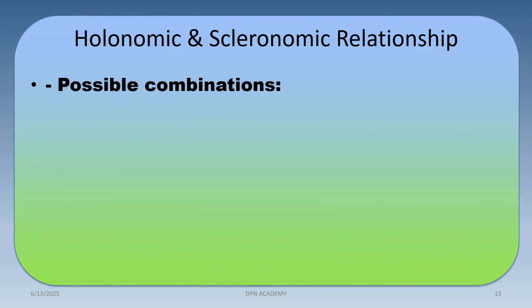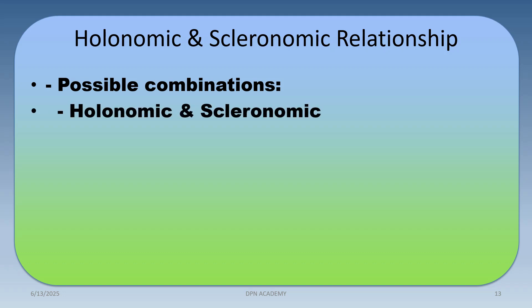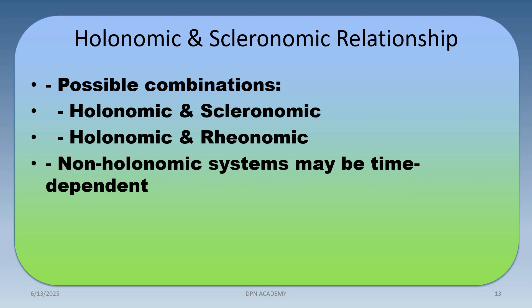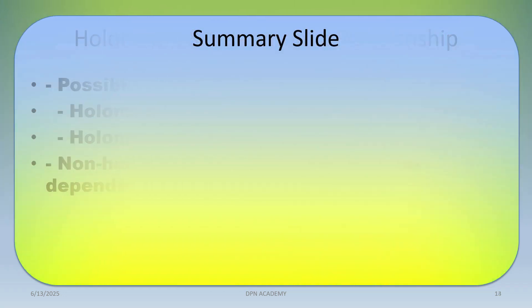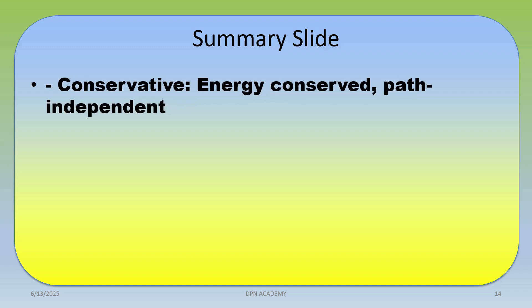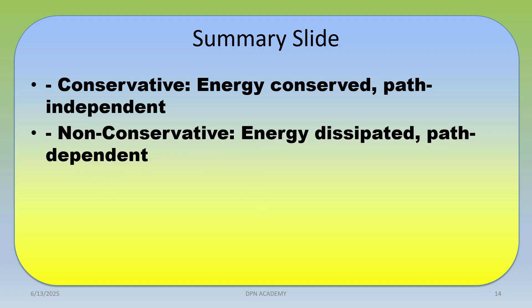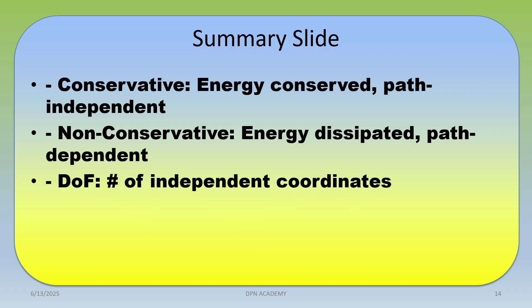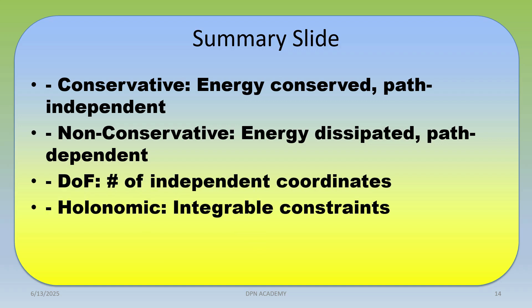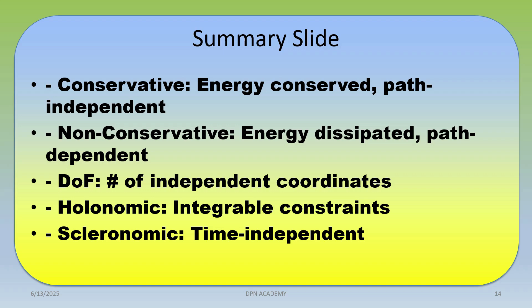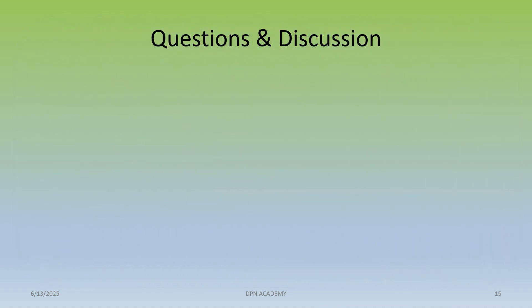There are possible combinations in classical mechanics: holonomic and scleronomic, and holonomic and rheonomic — a holonomic system may be time dependent. In summary: conservative means energy is conserved and path is independent; non-conservative means energy is dissipated and path is dependent. Degree of freedom is the minimum number of independent coordinates. Holonomic means integrable constraints. Scleronomic is time independent and rheonomic is time dependent.